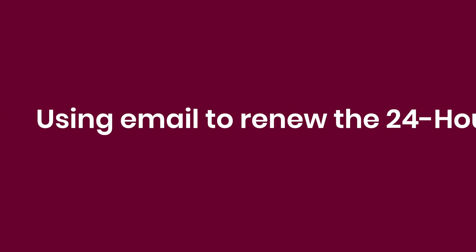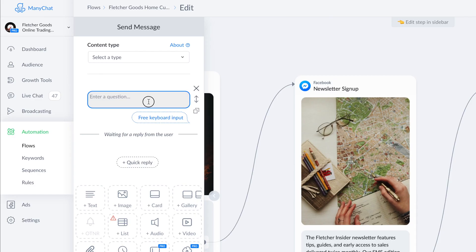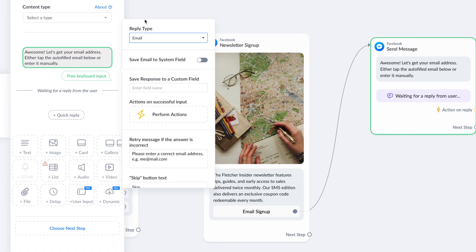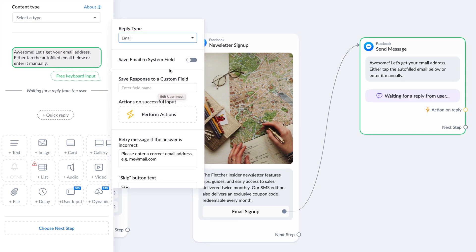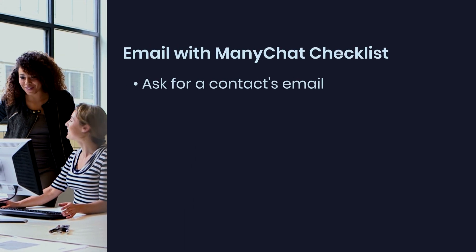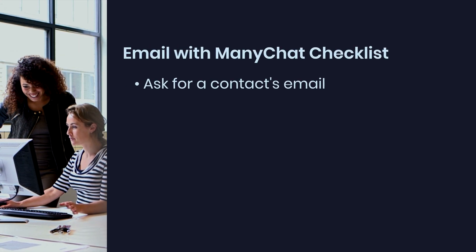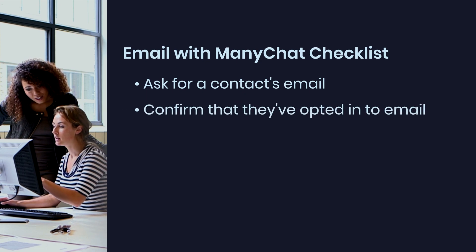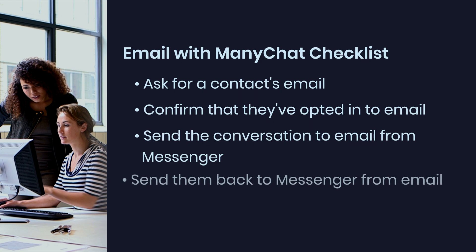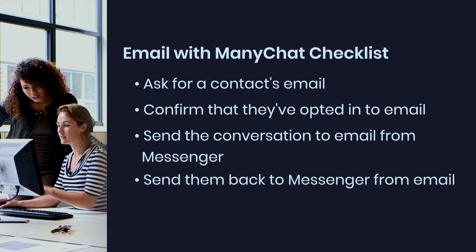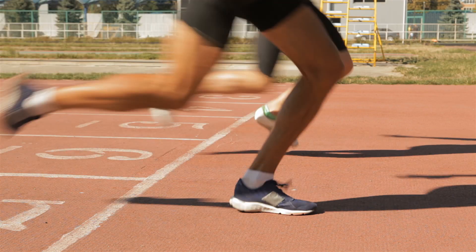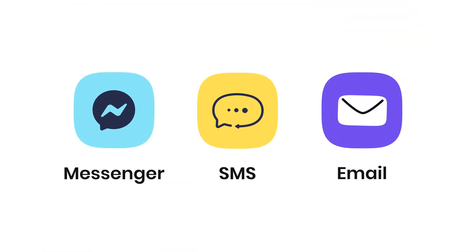Just like SMS, you can use email for re-engagement. This is another great channel to use, especially if you don't want to pay the SMS fee or if SMS is not offered in your area. Remember to ask for a contact's email and confirm they have opted in. You can even send the conversation to email and offer a click-to-Messenger action that brings them back to the Messenger conversation, which again restarts the 24-hour window.